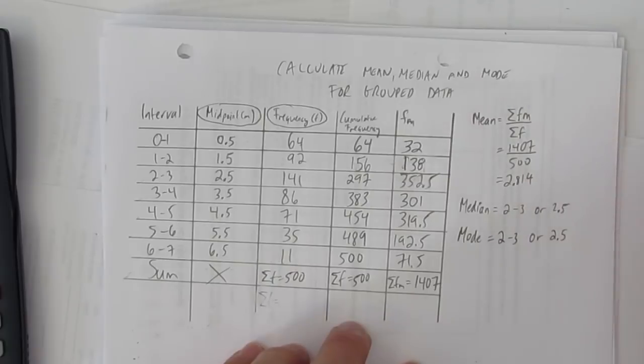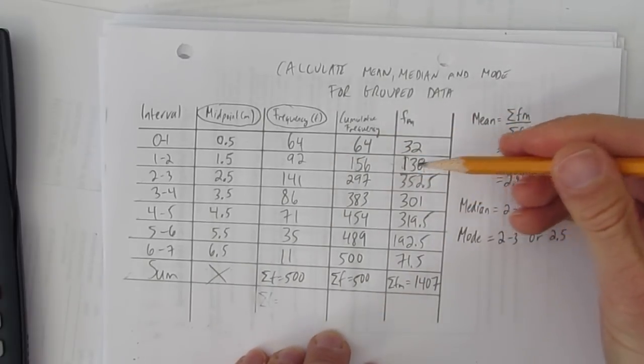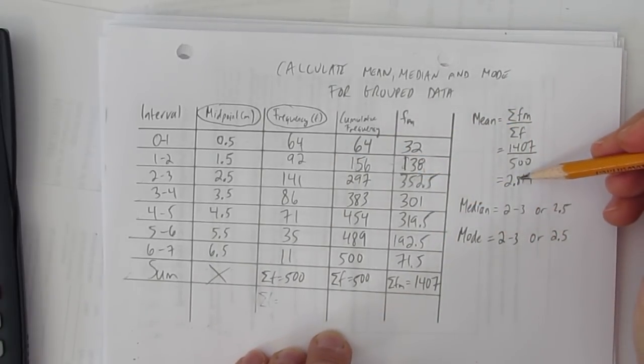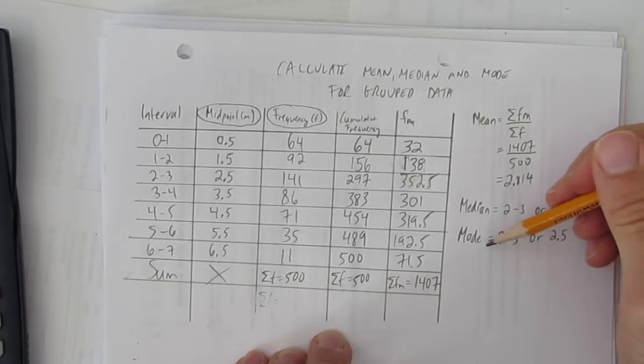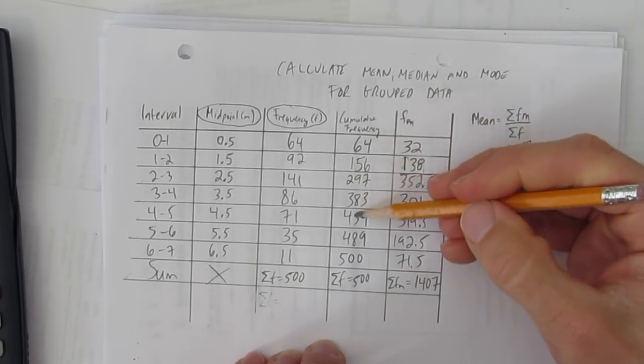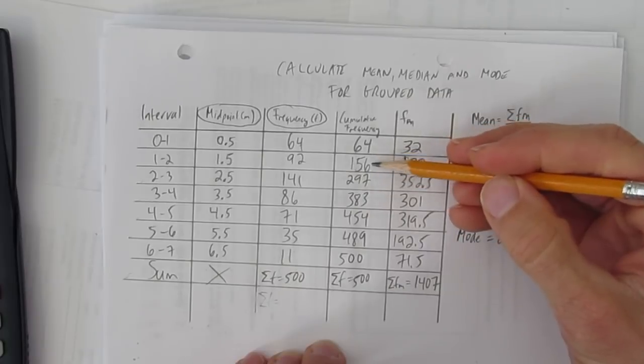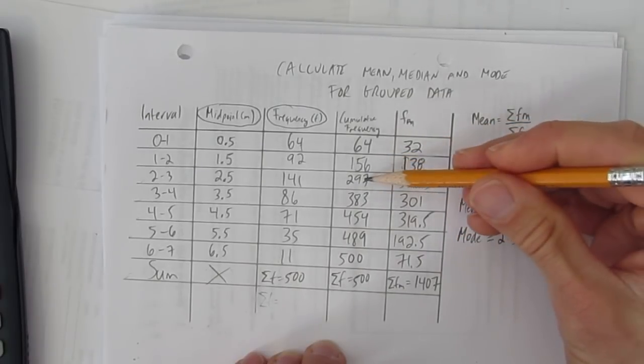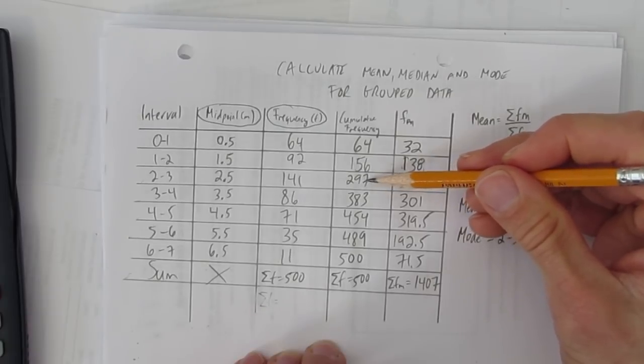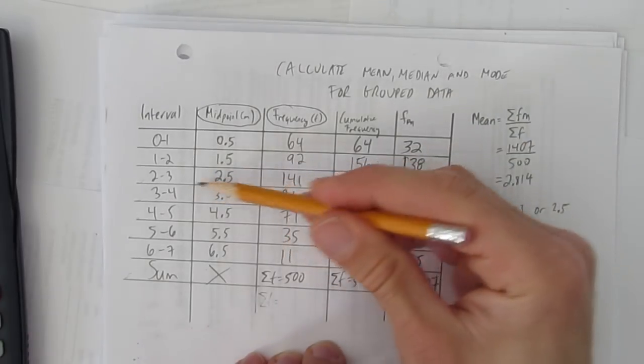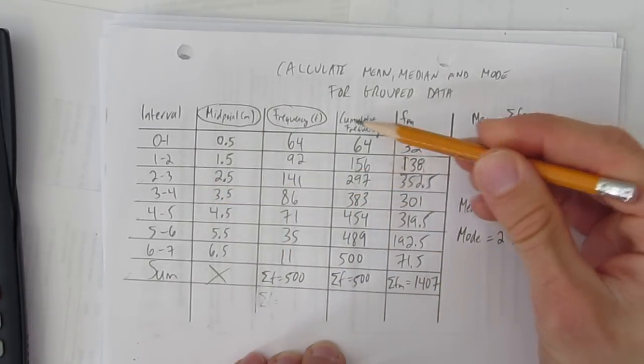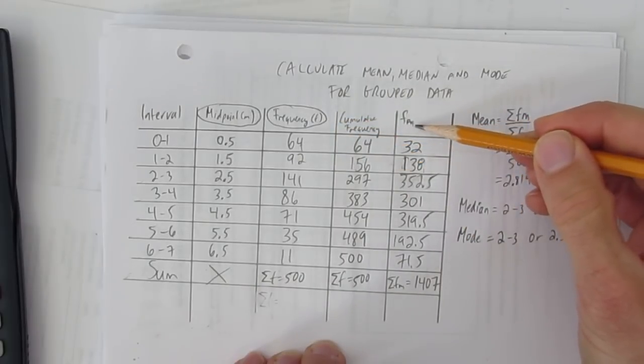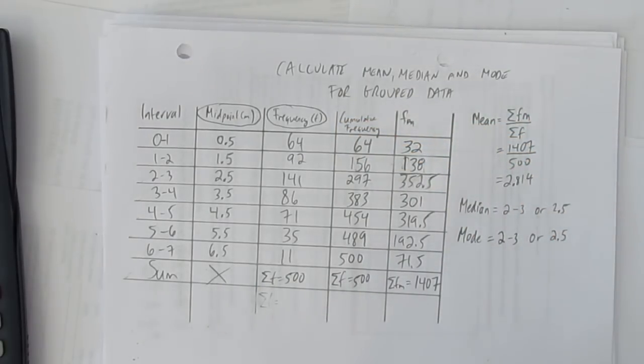So, we had grouped data. And we were able to make a table. And using that table, we calculated the mean, the median, and the mode. Be careful when you use this cumulative frequency column. You use it only to determine where that middle number is. I could see that I got to 250 and 251 on this interval. But it didn't come into play when I calculated FM. Be really careful about that. Even I made that mistake.